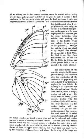Seta: stiff chitinous or sclerotized hair or bristle; also chaeta. Setaceous: being like or having the nature of a seta or of setae. Setose: bearing, or covered in setae. Setula: diminutive of setae; a small chitinous hair or bristle. Setulose: bearing, or covered in setulae.